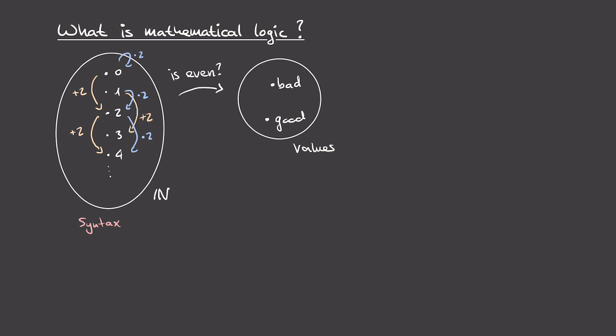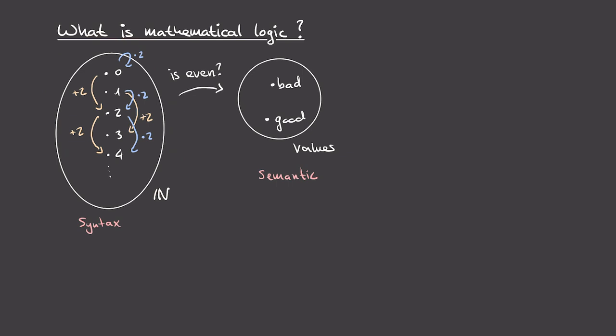On the other hand, here on the right we have our values, and these are semantic — meaning having to do with meaning. In our numbers example, we're assigning meaning to numbers by saying whether they're good or bad. In the example of logic, we'll be assigning truth values to formulas and generally saying that formulas are either true or false. What I've tried to illustrate is that in this setup we're separating syntax from semantics: the rules here are purely syntactic, so we never have to know whether a given number is even to use them.